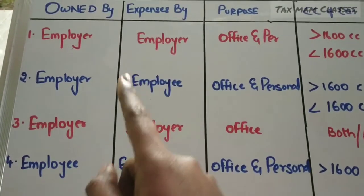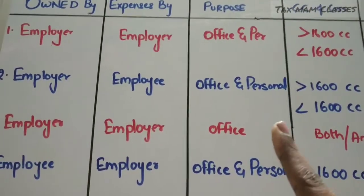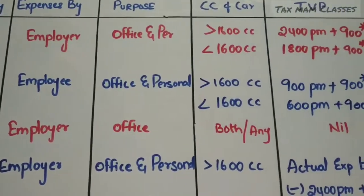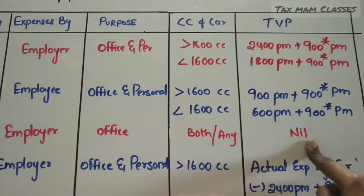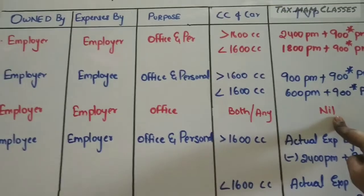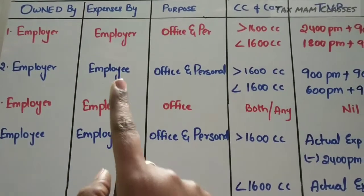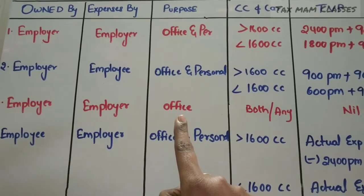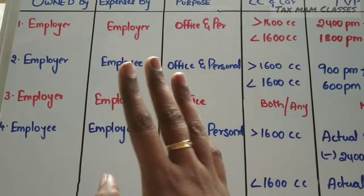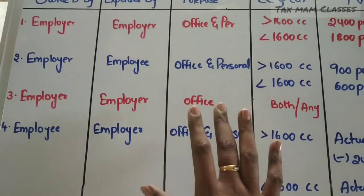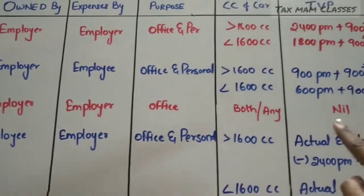In the third situation, the car is owned by the employer, the expenses are met by the employer, and the purpose is only for office. Whether it is a big car or small car, the taxable value of perquisite is nil. The reason is that the car is owned by the employer, expenses are met by the employer, and it is used fully for office — so there is no benefit to the employee, hence it is not taxable.